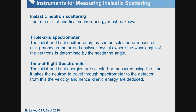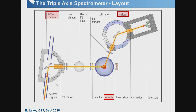For actual measurements, I'll focus on inelastic neutron scattering to measure excitations. You need to select the initial energy and measure the final energy. The two types of instruments are the triple axis spectrometer and the time-of-flight spectrometer. For the triple axis spectrometer: all neutron sources produce a white beam, so we use a monochromator crystal using Bragg scattering to select one particular wavelength, giving an intense beam of a single wavelength.